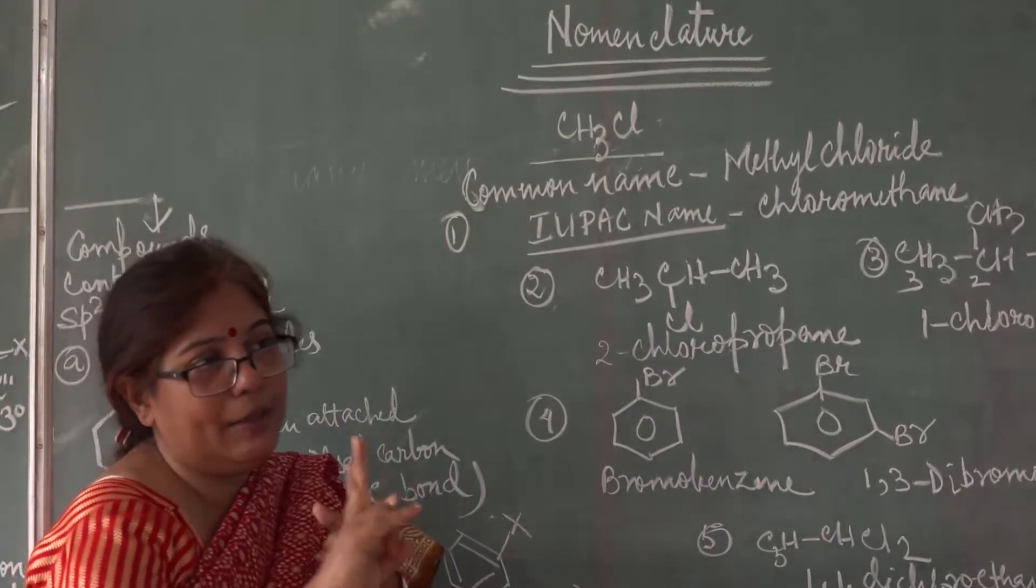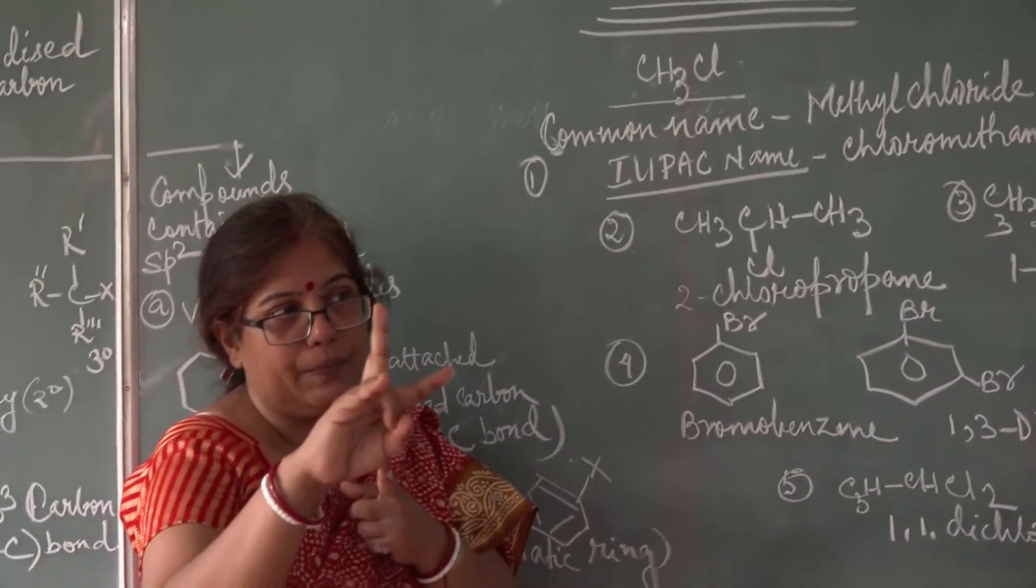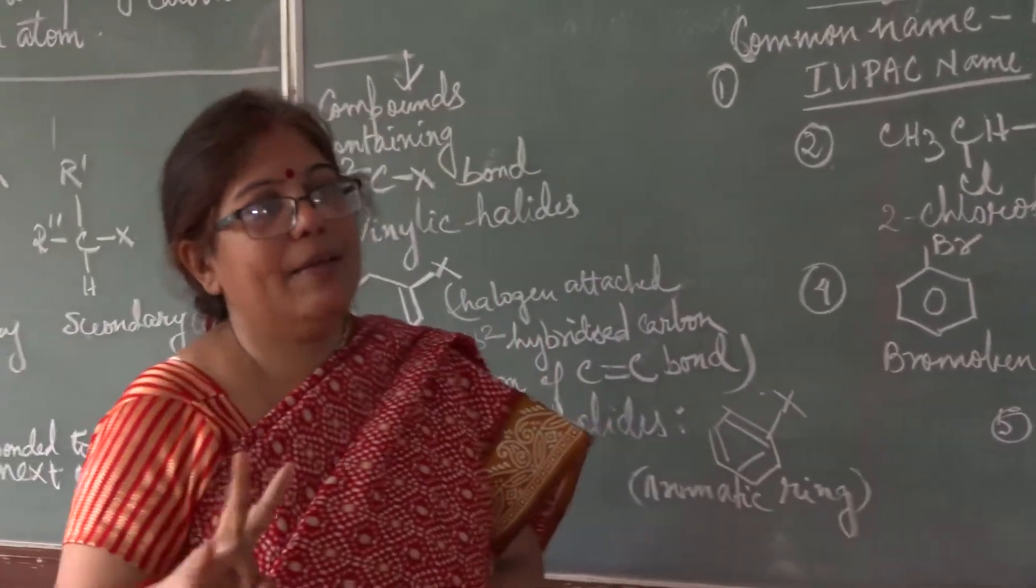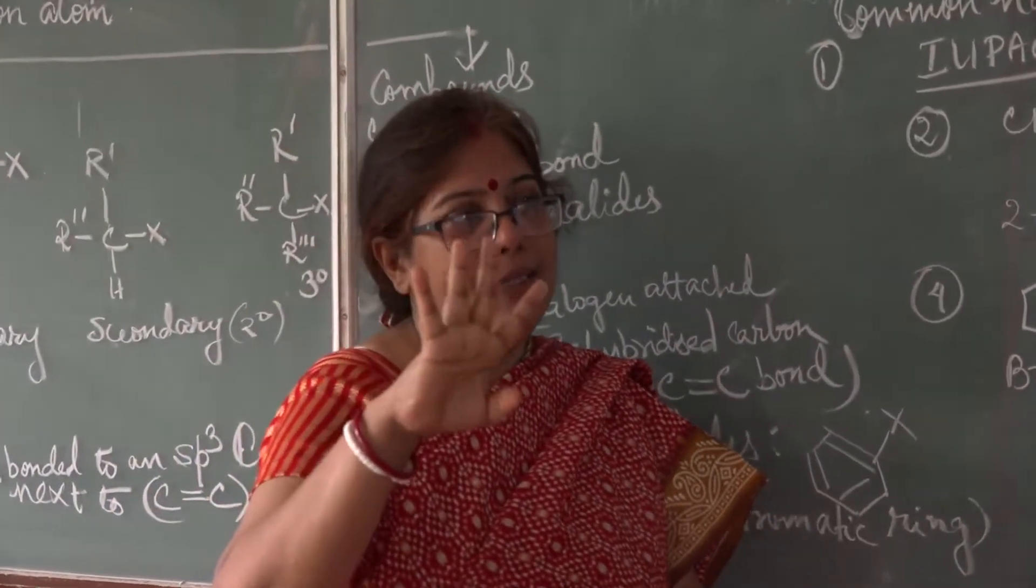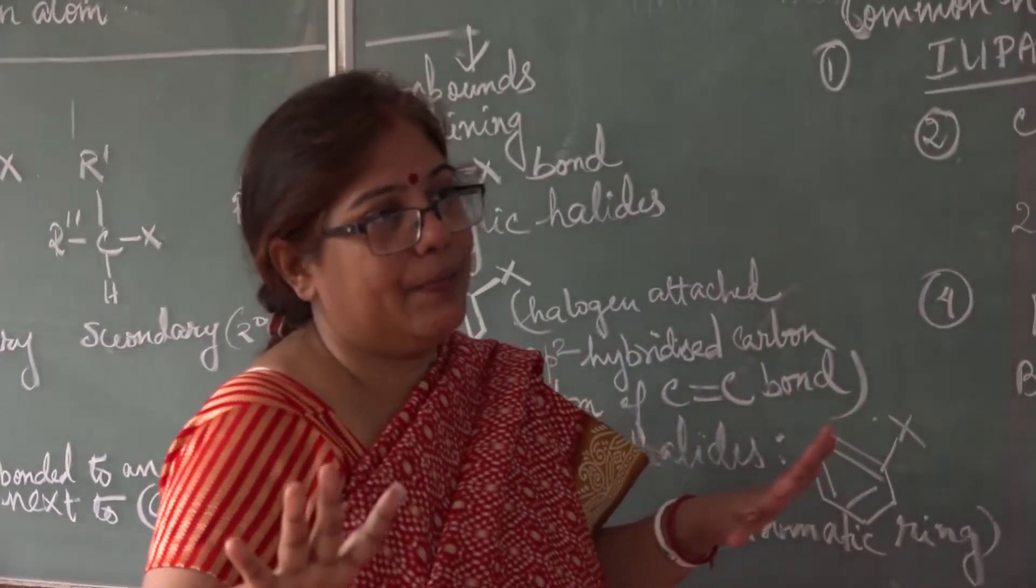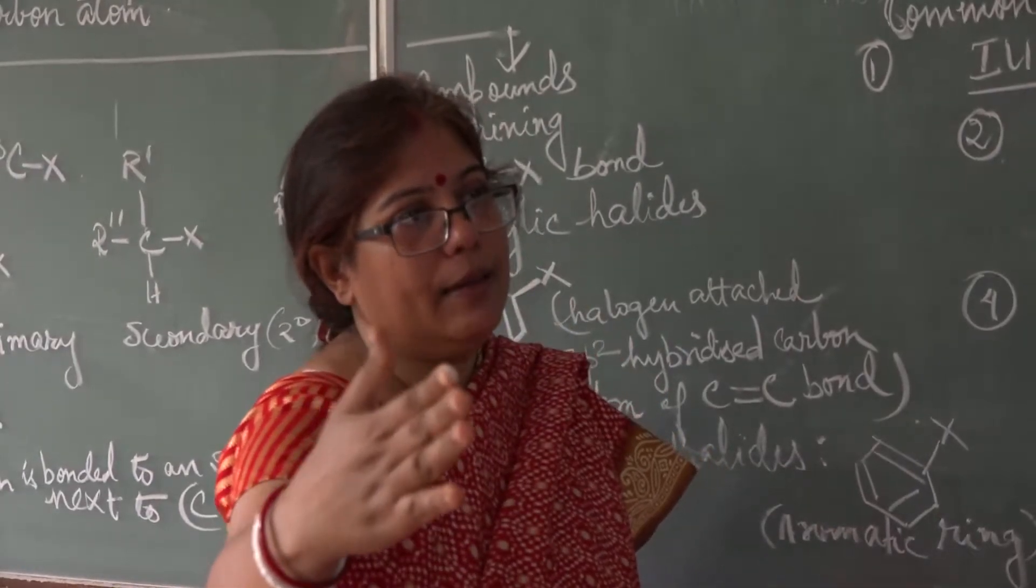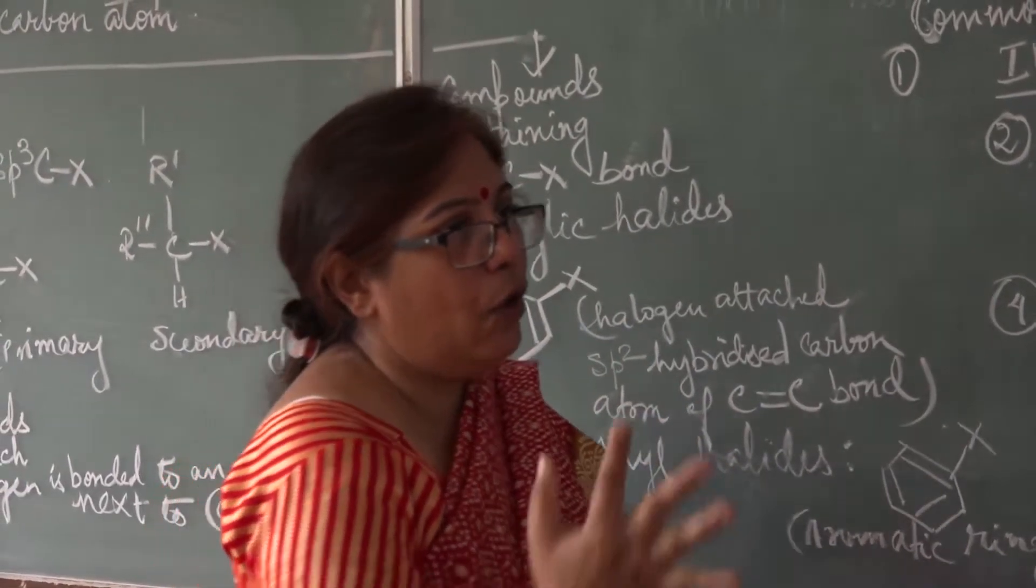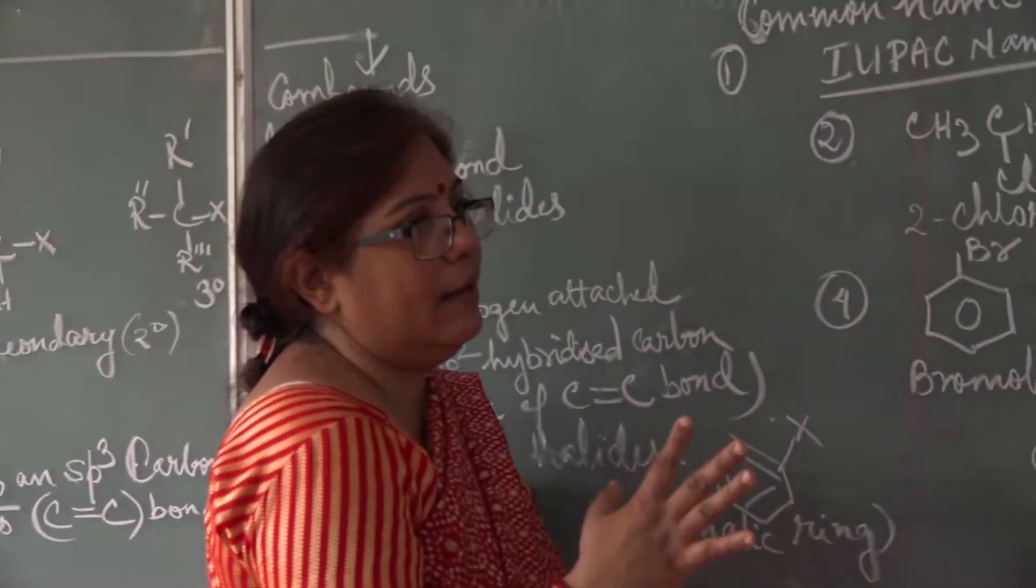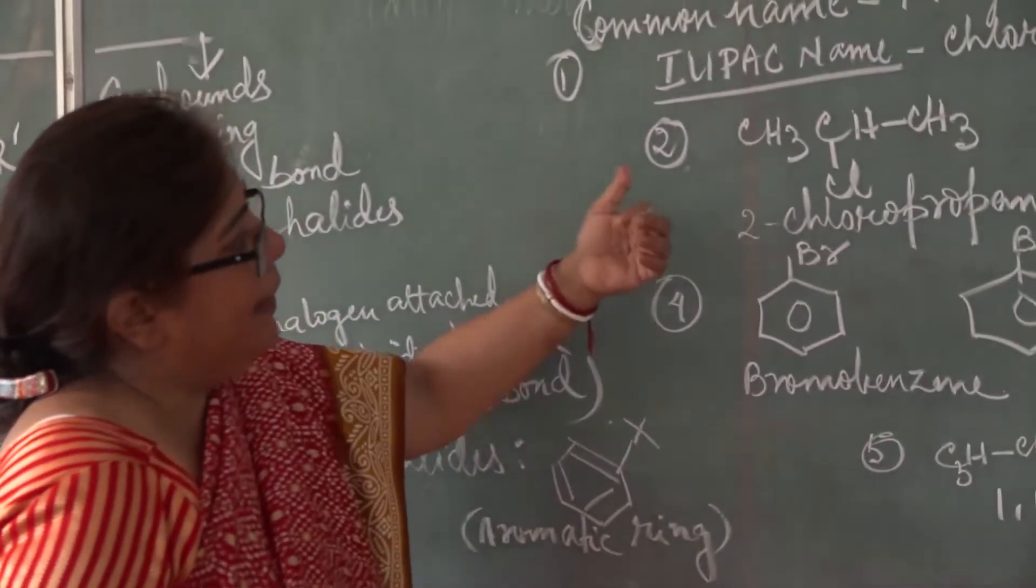So if I say bromoethane, how many carbons? Two carbons. And you know that carbon is having four valency. Carbon is having four hands. So CH3, CH2, CF. That is fluoroethane. Understood?